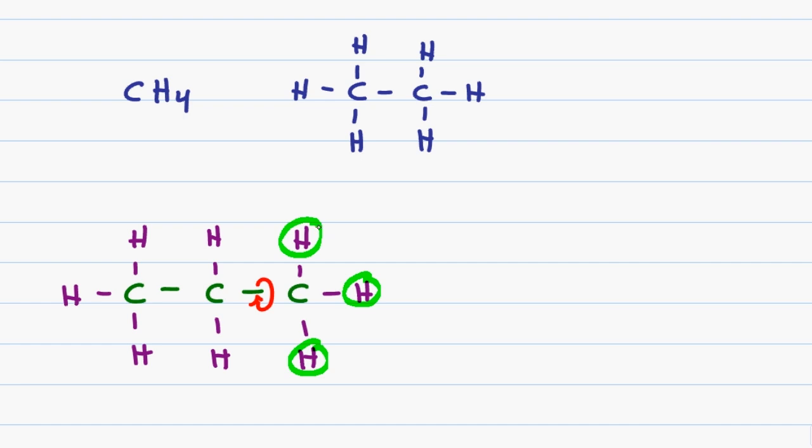However, notice that this molecule has a plane of symmetry so that the carbon on the right is essentially the same as the carbon on the left making the three terminal hydrogens on either side the same. This gives me one type of hydrogen and then I have two hydrogens on the central carbon. However, these are different from the terminal hydrogen based on the fact that they are located on a secondary carbon while the terminal hydrogens are located on a primary carbon.